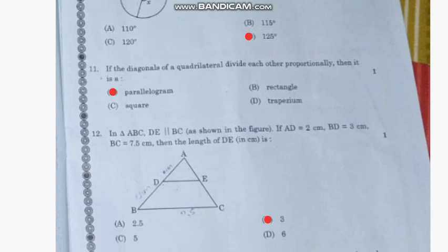Question number 11: If the diagonals of a quadrilateral divide each other proportionally, then it is a—the correct answer is option A, parallelogram.